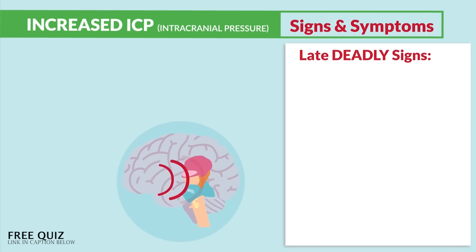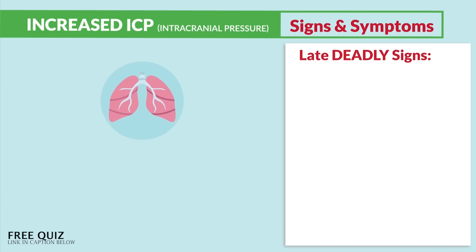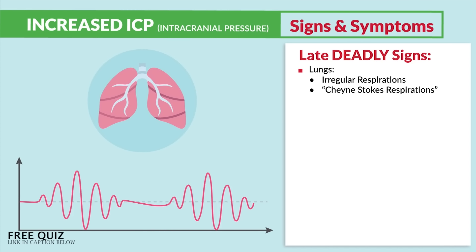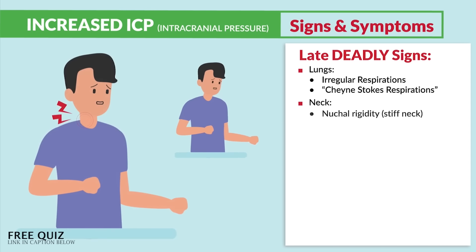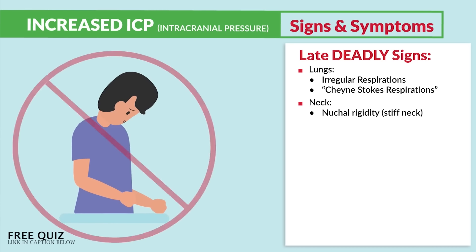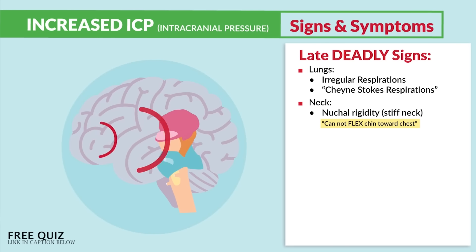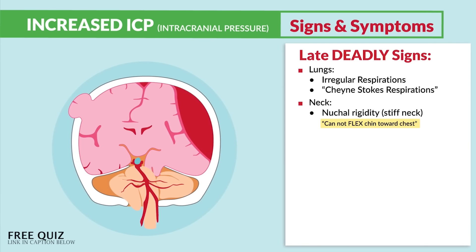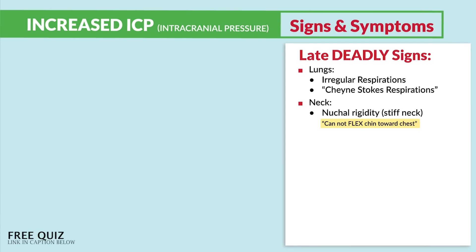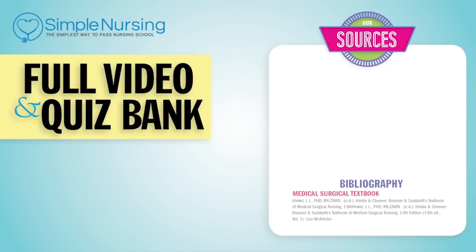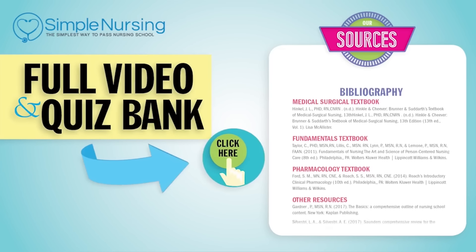For the late, deadly signs: as ICP builds, it puts a lot of pressure on the brain stem at the base of the brain, which controls heart rate and breathing. This leads to irregular respirations known as Cheyne-Stokes respirations — basically fast and slow breathing. In the neck, we see nuchal rigidity, that stiff neck — patients cannot flex the chin toward the chest. All this pressure inside the brain pushes down on the brain stem causing herniation. The key signs that the brain stem is affected: the pupils will be fixed and dilated, and sometimes unequal.